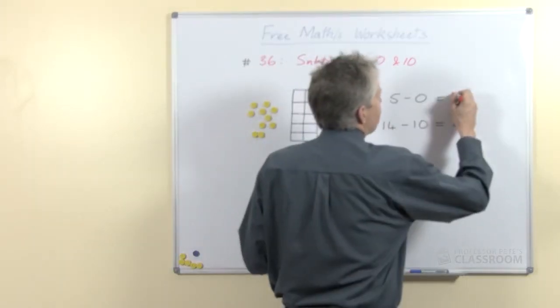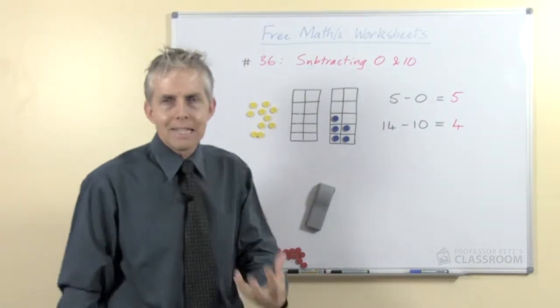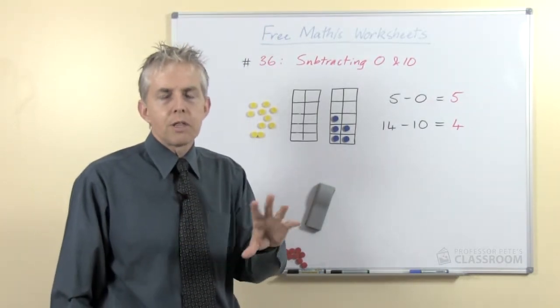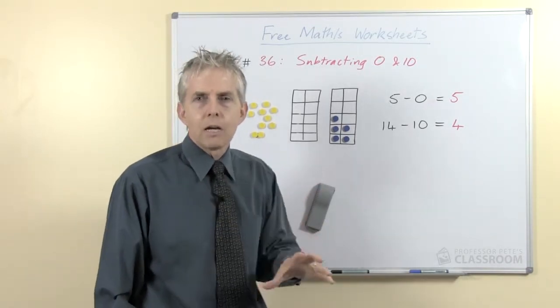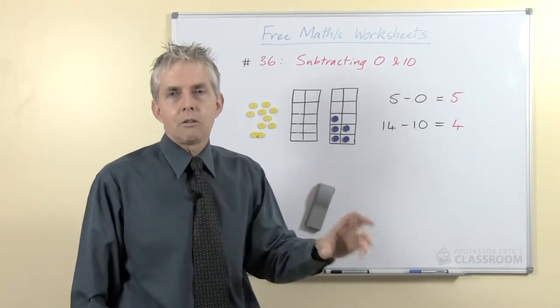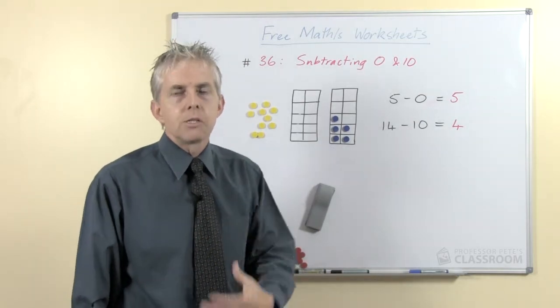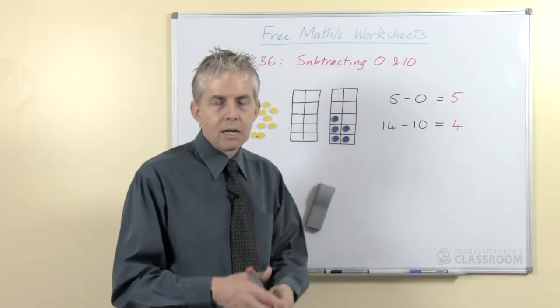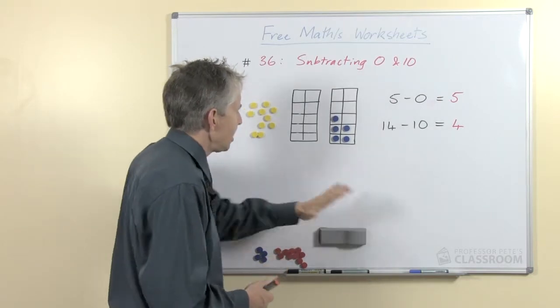We're dealing here with a principle or a property of operations called the identity. I looked this up and I couldn't find out for sure whether there is an identity for subtraction, but I have a feeling it's not actually phrased that way. It's an identity for addition. What that means is if you add zero to any number it leaves the number the same and so it's called an identity property. In multiplication the identity property is contained within the number one of course. Alright, enough technical talk.